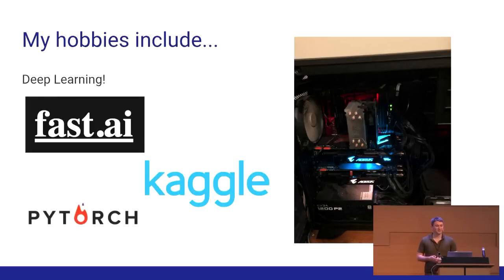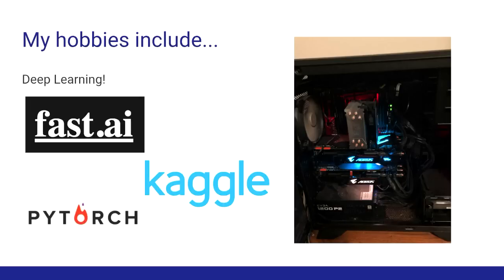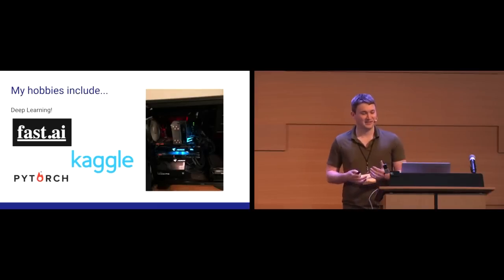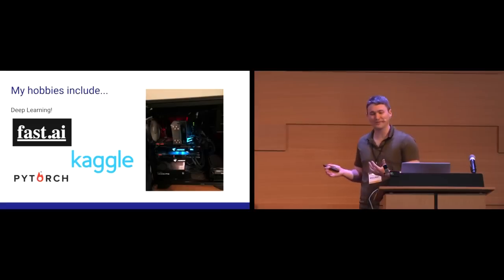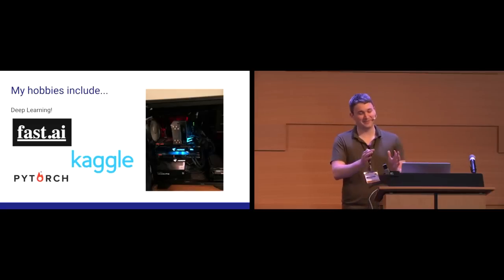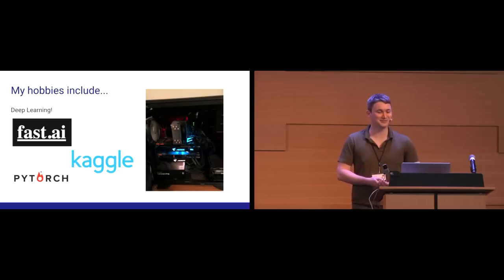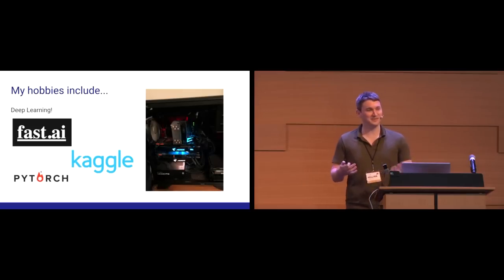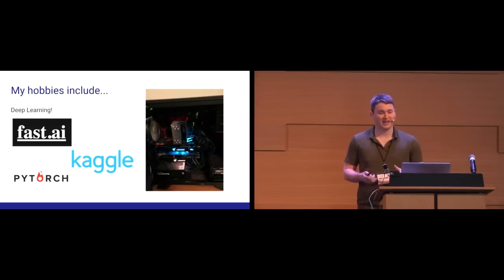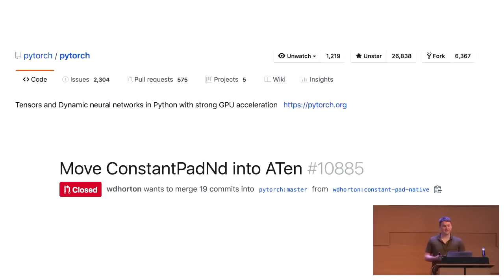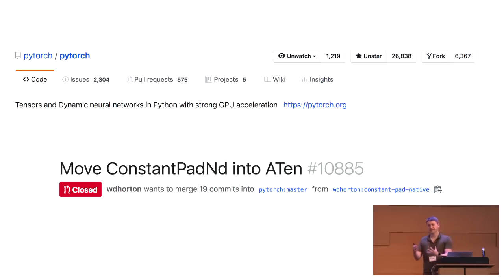It also relates to my hobbies, which include deep learning. I got hooked through the fast.ai deep learning course and started doing Kaggle competitions. That got me thinking about hardware — after leaving a GPU running on AWS for one weekend and getting a big bill, I decided to build my own machine. I also made a small pull request to PyTorch, which moved a function from Python into C++. Seeing how PyTorch merged Python API with C++ and CUDA programming was really fascinating.